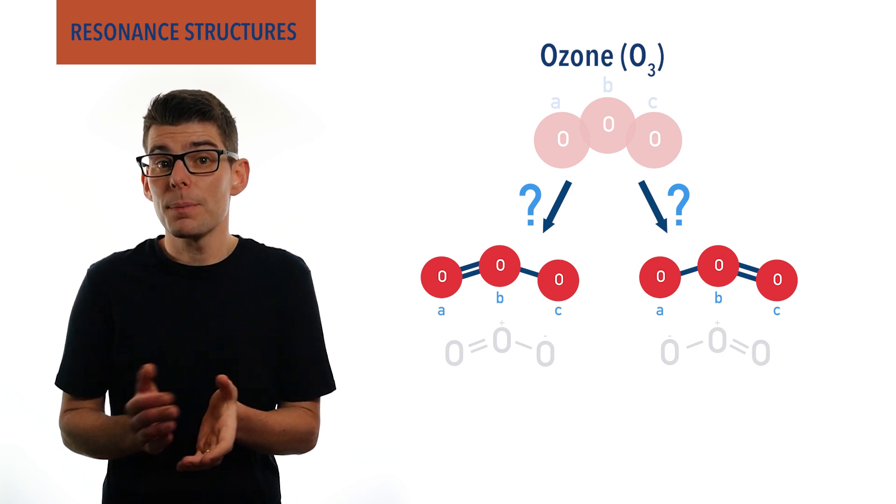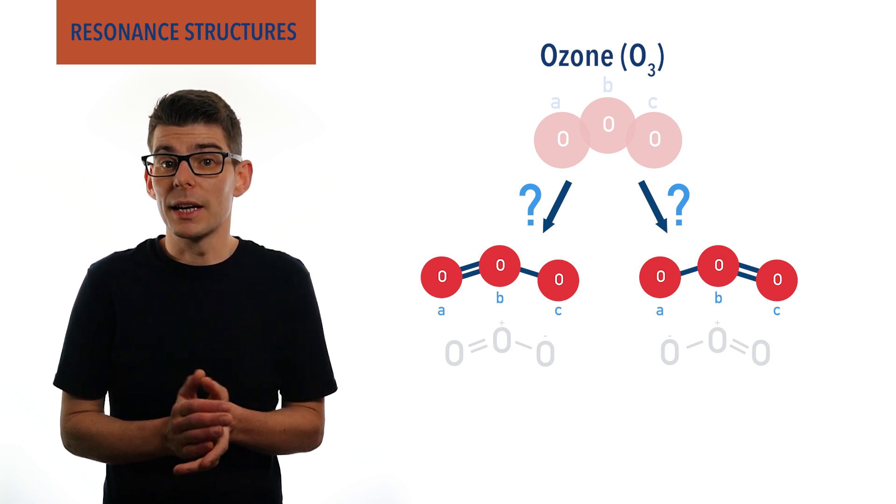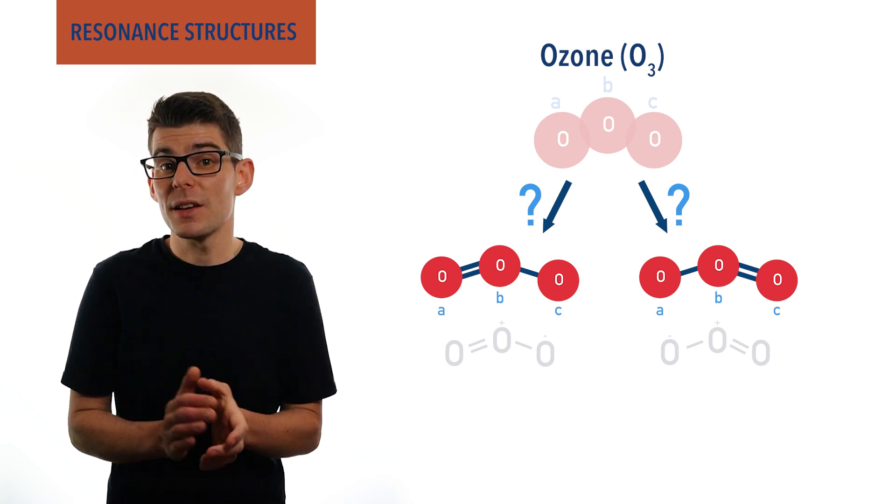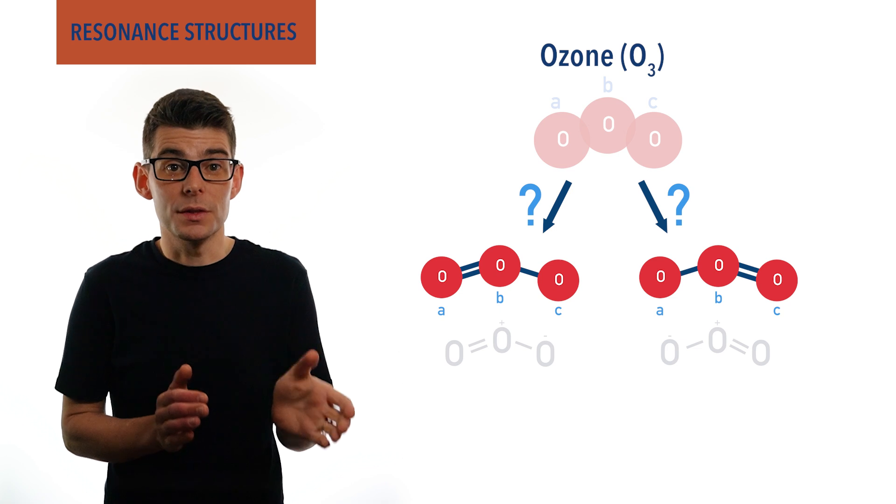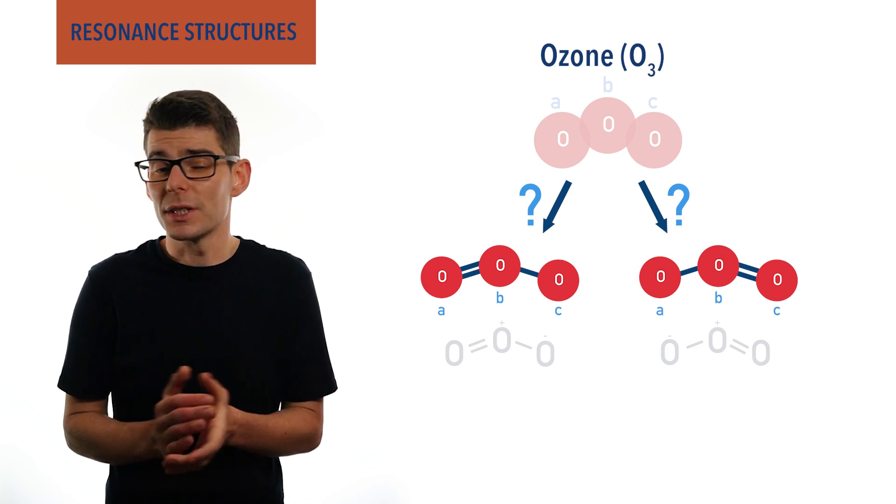And this is confirmed by experimental data, which shows all oxygen oxygen bond lengths in a molecule of ozone are equal. Now this wouldn't be the case if ozone truly had one single and one double bond, as single and double bonds have different lengths.